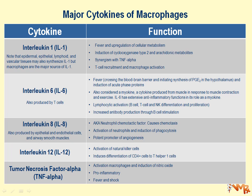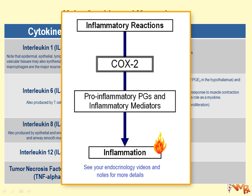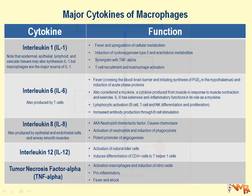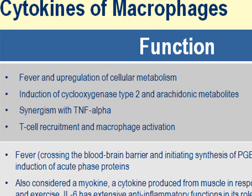Interleukin-1 causes fever and upregulates cellular metabolism. It induces cyclooxygenase type 2. In the chapter on endocrinology we will cover the cyclooxygenase system and compare and contrast cyclooxygenase type 1, which plays physiological roles — the 'good' cyclooxygenase — and cyclooxygenase type 2, which is involved in inflammatory responses. One of the major roles of interleukin-1 is production of cyclooxygenase-2 and arachidonic acid metabolites involved in inflammation.